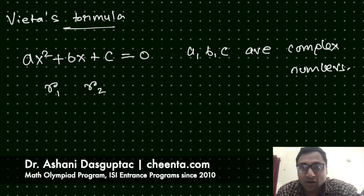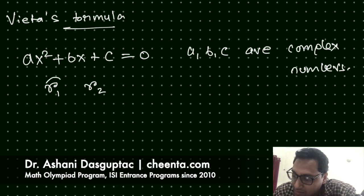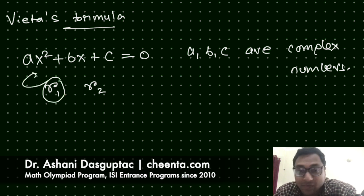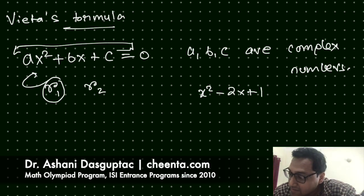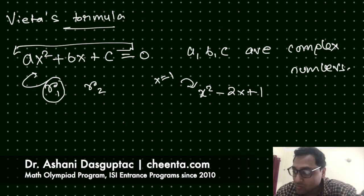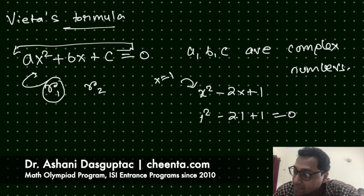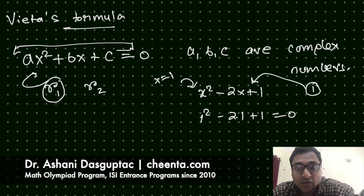What that means is that if you plug r1 into this equation, this expression becomes zero. For example, x squared minus 2x plus 1 — if you plug in x equals 1, then that becomes zero: 1 squared minus 2 times 1 plus 1 is zero. So we say that 1 is a root of this particular equation.